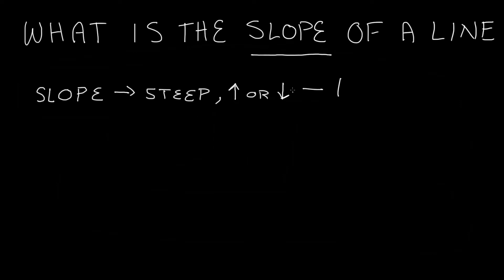So if we start with the horizontal case — if we have some line that's just going left to right and it doesn't get any higher as it goes to the right — any point on the right compared to any point on the left has the same height. This type of line has a slope of zero. Zero is the number that represents the slope of a horizontal line.